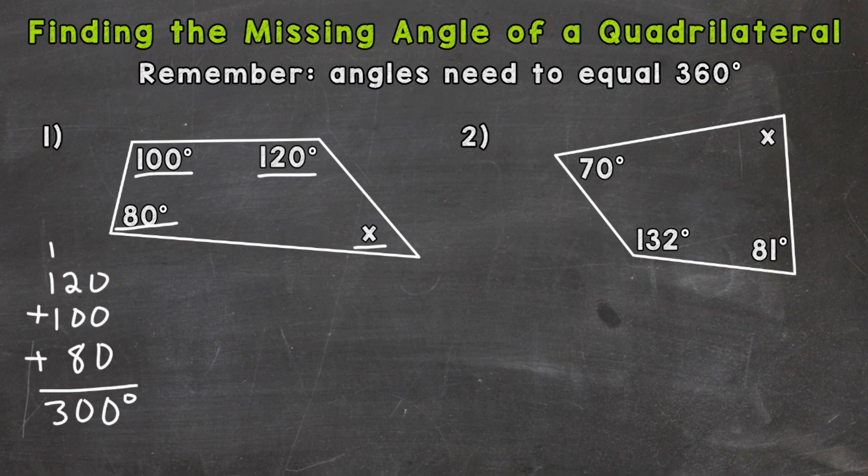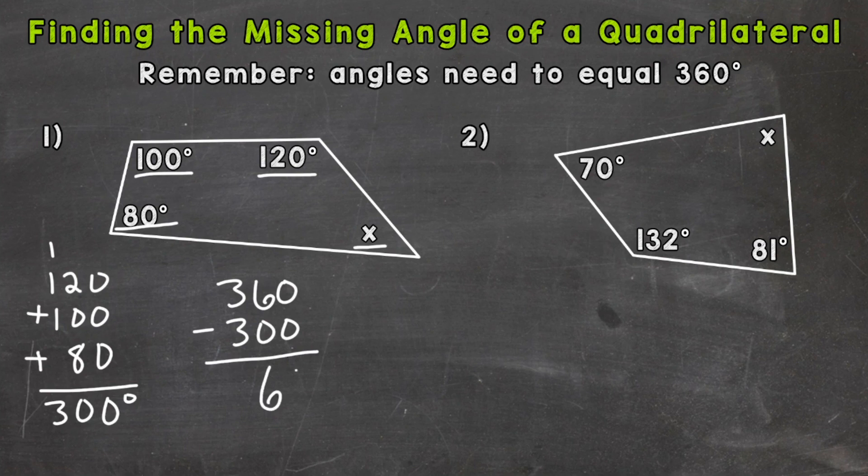So we need to get to 360. So we take what we need to get to, 360 degrees, and subtract the 300 degrees, what we know. That will give us what our unknown is. So 360 degrees minus 300 degrees equals 60 degrees. So x equals 60 degrees. That's our missing angle.